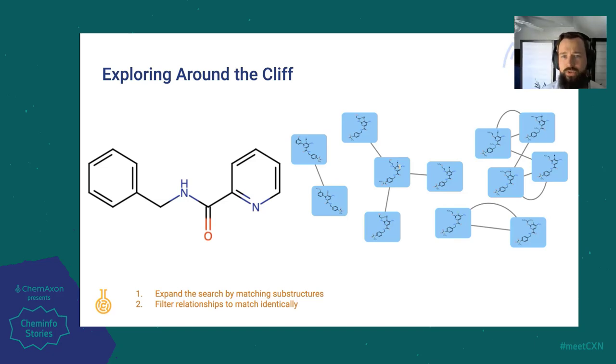We can also expand the scope of our search if we identify an interesting scaffold. So in the example we see here, we run a substructure search on the structure on the left, before again filtering on relationships. In this case, we do see a small expansion in the relevant structures. However, none of the new relationships showed particularly interesting delta activity values.